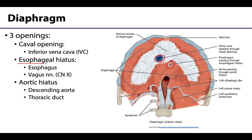Next is the esophageal hiatus, which as its name suggests allows the esophagus to traverse the diaphragm. The esophagus travels through the posterior thorax, passes through this hiatus, and transitions into the stomach region once in the abdominal cavity. Sometimes portions of the stomach can herniate up through this esophageal hiatus into the thoracic cavity. Also traversing this hiatus on either side of the esophagus are the two vagus nerves, which provide parasympathetic supply to many abdominal organs.